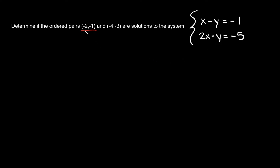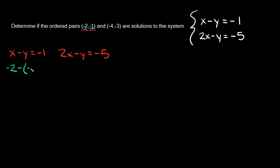So let's start with this ordered pair right here: negative 2, negative 1. We're going to plug it into both of these equations. So I'm going to plug it into x minus y is equal to negative 1 and the other one, 2x minus y is equal to negative 5. This is your x coordinate and this is your y coordinate. So we're going to plug in negative 2 for x and then minus our y, and our y is negative 1, and that's equal to negative 1.